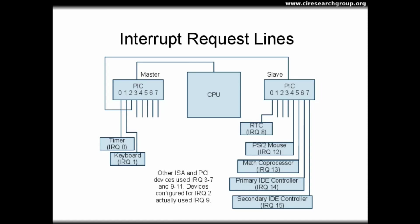On the slave chip, pin 0, which corresponds to IRQ 8, was connected to the real-time clock. Pin 4, corresponding to IRQ 12, was connected to a PS2 mouse. Pin 5, or IRQ 13, connected to the math coprocessor, which was a separate component from the main CPU in earlier PCs. Pins 6 and 7, corresponding to IRQ lines 14 and 15, connected to the IDE controllers, used for disk and eventually for optical devices. This left pins 1 through 3 on the slave controller, or IRQs 9 through 11, available for hardware devices.